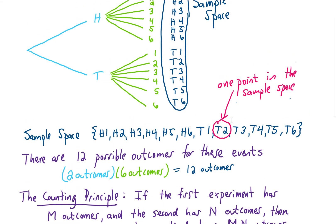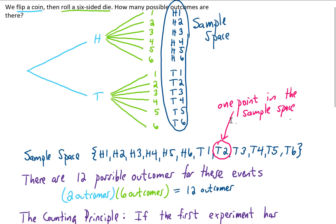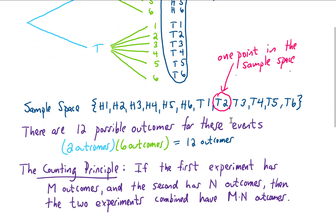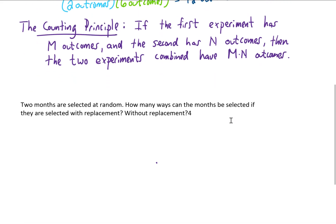In fact, this is what we call the counting principle, which says that if the first experiment has m outcomes — that was our coin flip with two outcomes — and the second experiment has n outcomes — that was the die roll with six outcomes — then the two experiments combined have m times n outcomes. In our example, that's 2 times 6 equals 12 outcomes. The point of these tree diagrams was to convince you that this counting principle makes sense and to give you a way to visualize it. If you feel like you understand the counting principle, then we're ready to do a few more examples.